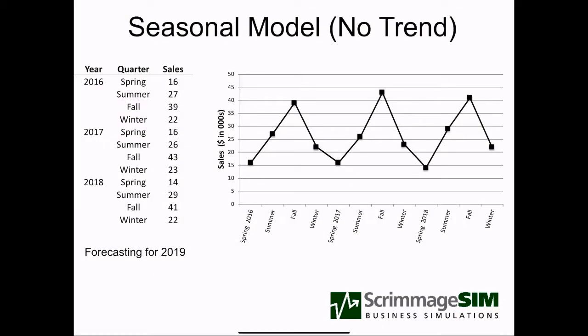The next forecasting model we're looking at is the seasonal model with no trend. We're looking at patterns of seasons — spring, summer, fall, winter — affecting sales levels. The idea is that there's an overall sales level through the year and then variations up or down based on the season of the year.